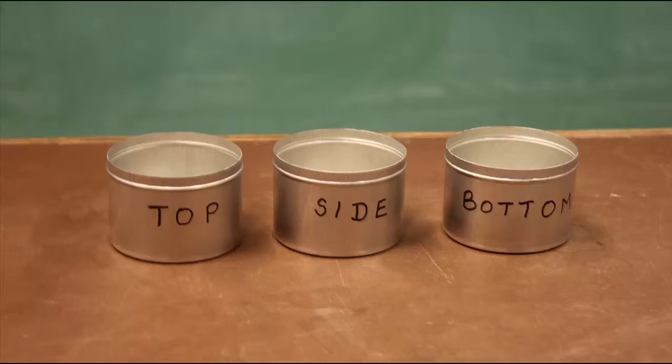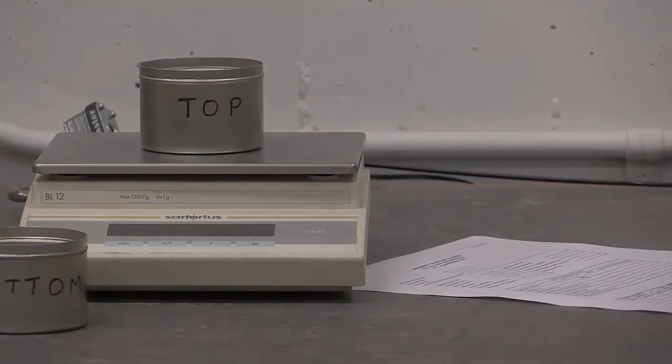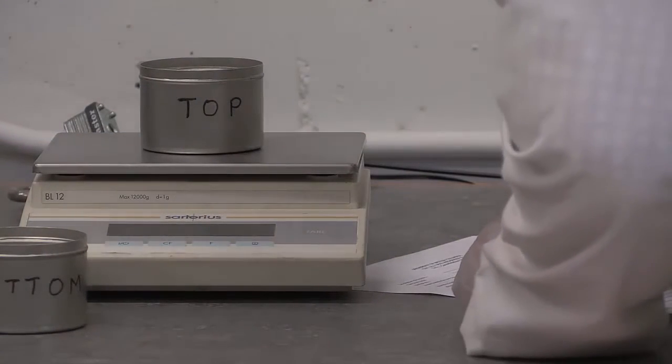You will be provided with three metal containers that will be used for collecting clay samples for the determination of moisture content of the specimen. You will need to label the containers and measure the mass of each one separately.